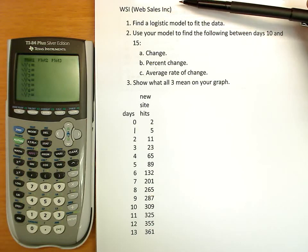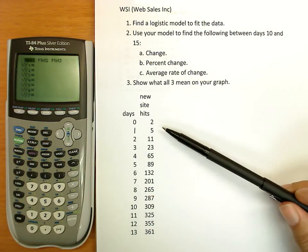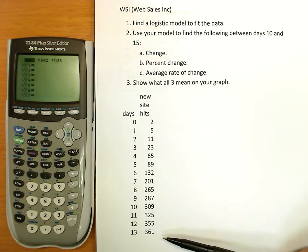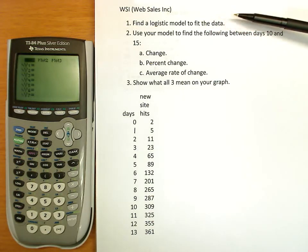Here's the situation. WSI, or Web Sales Incorporated, has put up a new site, and they're charting the number of new site hits for each day that the site has been up. So you have the data here, and we're going to find the best logistic model to fit the data.